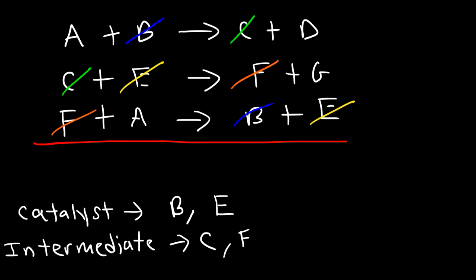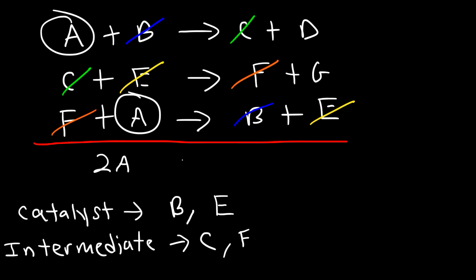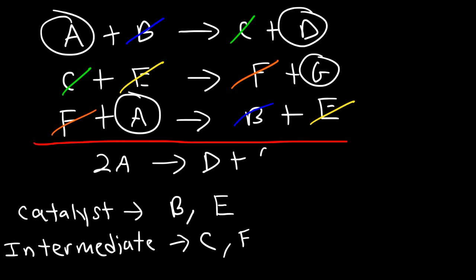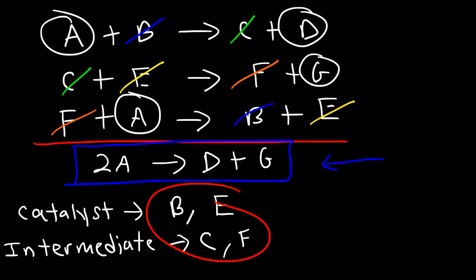Hopefully these two examples give you a good understanding of how to identify a catalyst and an intermediate in a reaction mechanism. If you want to write the overall reaction, on the left side we have A plus A, which makes it 2A, and on the right side D plus G. Make sure that the catalyst and the intermediate are not present in the overall reaction — so A, D, and G cannot be a catalyst or an intermediate.